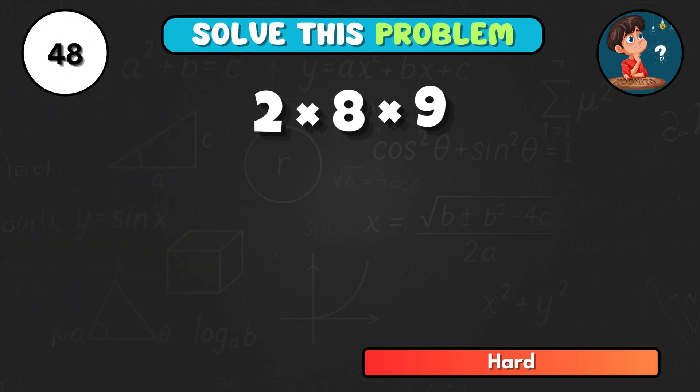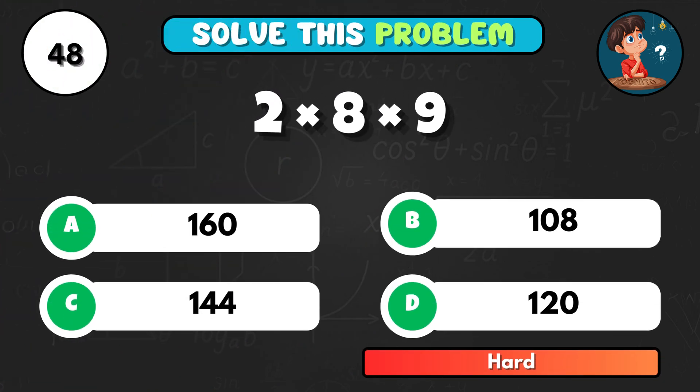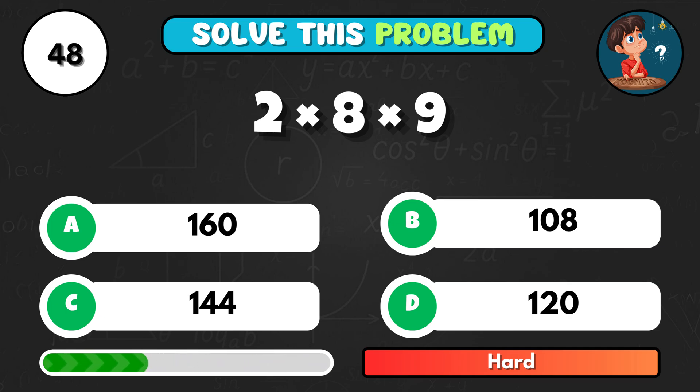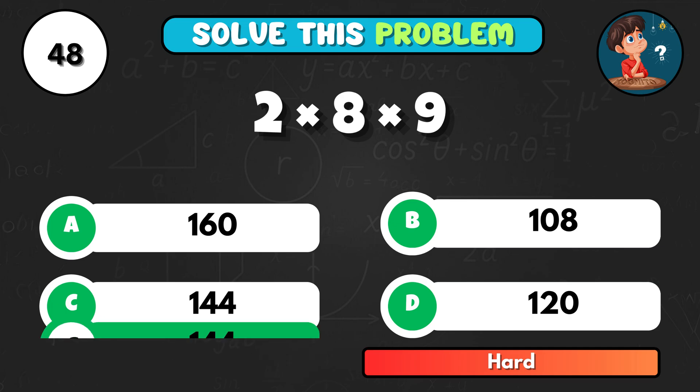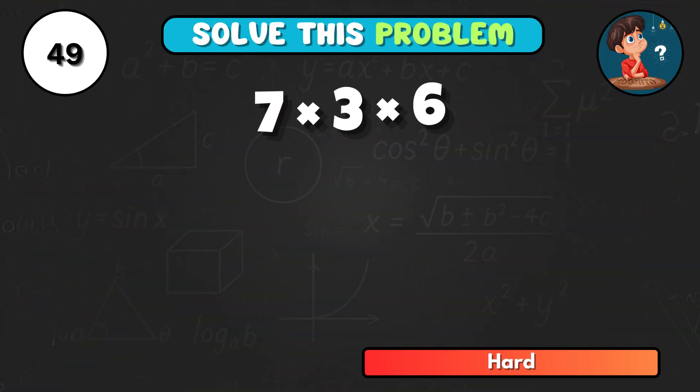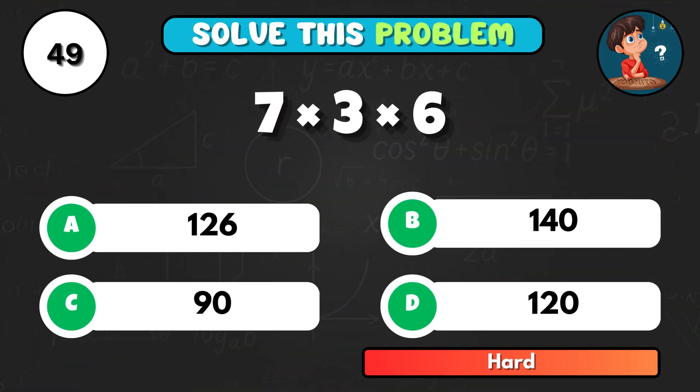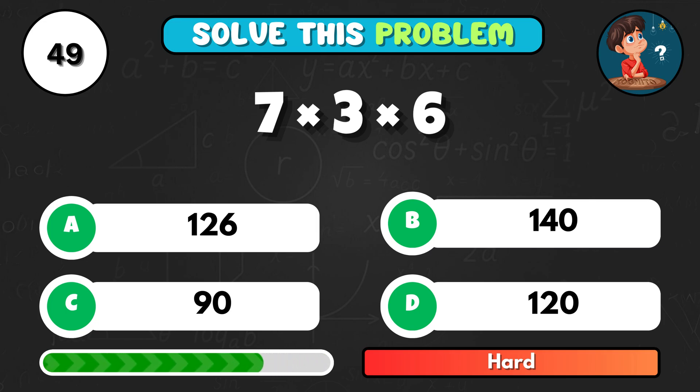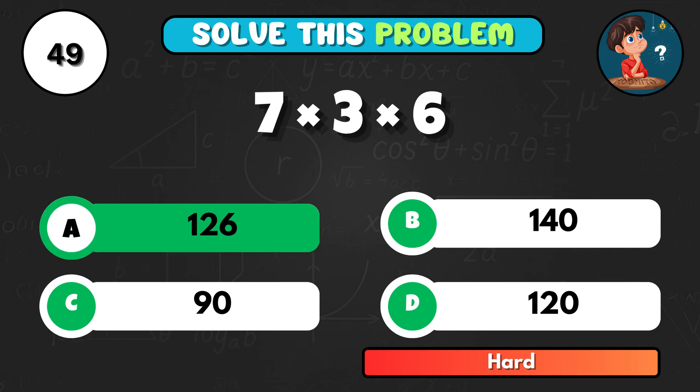Think carefully. 2 times 8 times 9 equals... It equals C, 144. Solve this one. 7 times 3 times 6. That's A, 126.